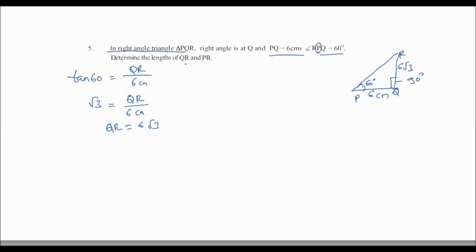Now we also need to find PR, the hypotenuse. Using Pythagoras: hypotenuse² = adjacent² + opposite². We can also use sin60 = opposite/hypotenuse to find the hypotenuse directly.